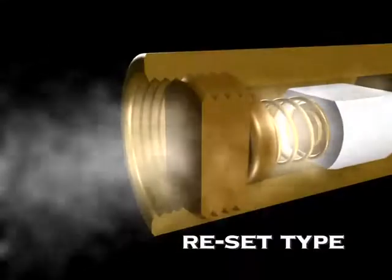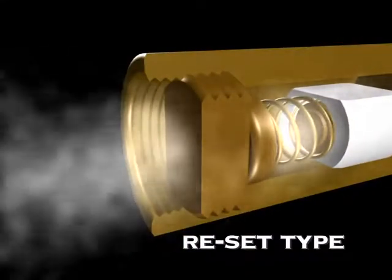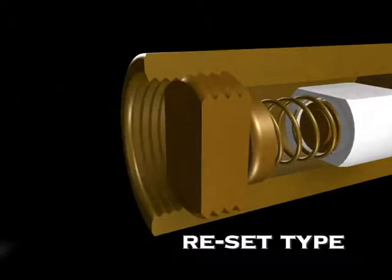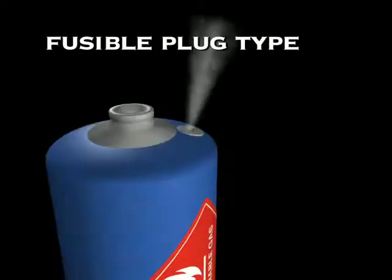A reset type opens when the pressure is high and then closes again when the pressure drops. A fusible plug opens with heat or pressure.